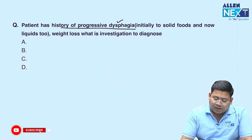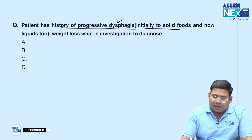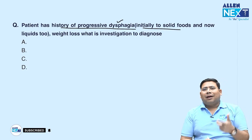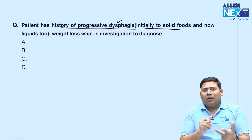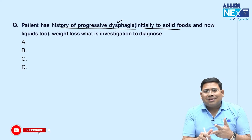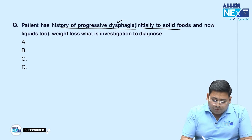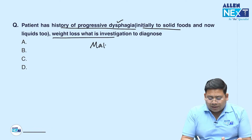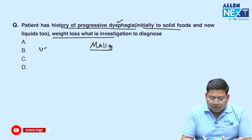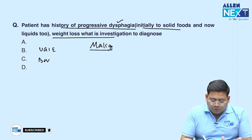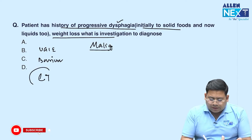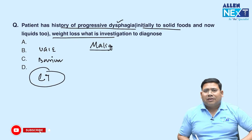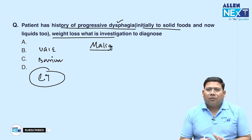Next: a patient with progressive dysphagia initially to solids — this is either malignancy or stricture — with weight loss, indicating malignancy. The best investigation: if barium was in the options, upper GI endoscopy would be preferred, but CT is the investigation of choice for malignancy.